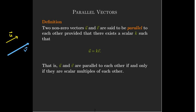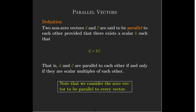And our definition of parallel vectors says that they are scalar multiples of each other. And as a special case, we consider the zero vector to be parallel to every vector.